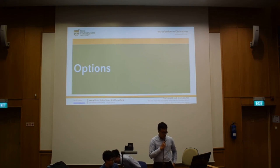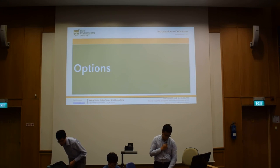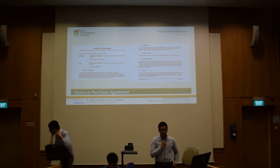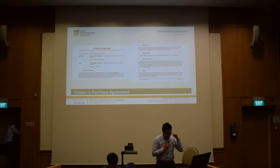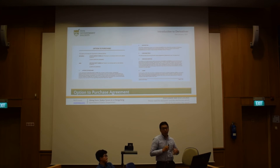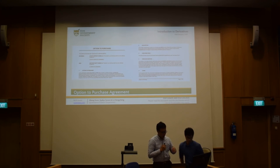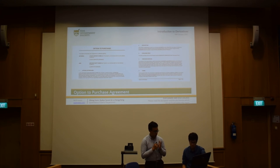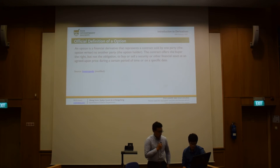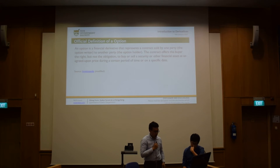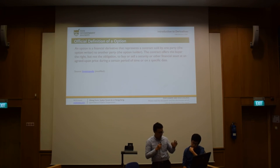Now let's talk about the last derivative instrument in this workshop: options. Has anyone heard of this term or seen an Option to Purchase contract? Options are quite common — you will need to take part in an Option to Purchase Agreement to buy housing property in Singapore. In this case, you pay a premium — usually $1,000 — to purchase the right to buy a property, while the eventual owner gets the funds to finance the house. Officially, an option is a financial derivative that represents a contract sold by one party — the option writer — to another party — the option holder. The contract offers the buyer the right, but not the obligation, to buy or sell a financial asset at an agreed-upon price during a certain period of time or on a specific day.